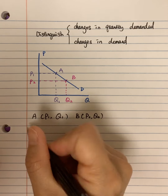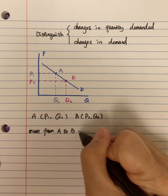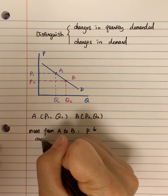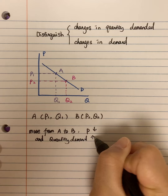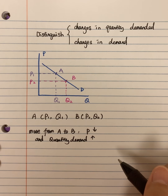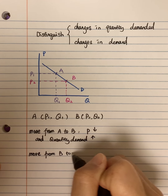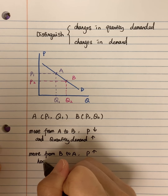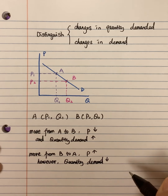Moving from A to B: price decreases and quantity demanded increases — because if the price decreases from P1 to P2, the quantity demanded increases from Q1 to Q2. On the contrary, moving from B to A: the price increases, and quantity demanded decreases.